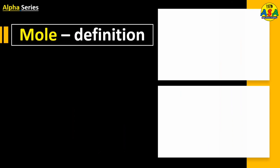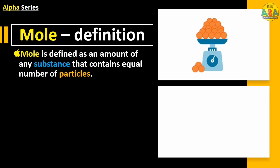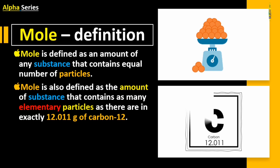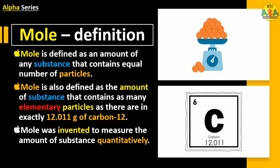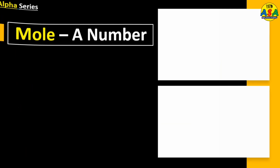Mole definition: A mole is defined as an amount of any substance that contains an equal number of particles. Mole is also defined as the amount of substance that contains as many elementary particles as there are in exactly 12.011 grams of Carbon-12. Mole was invented to measure the amount of substance quantitatively.